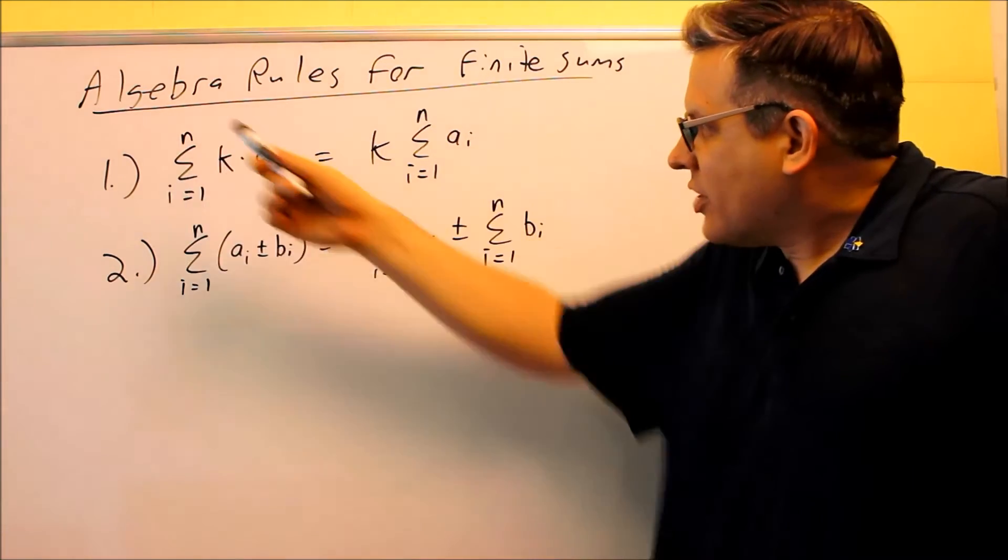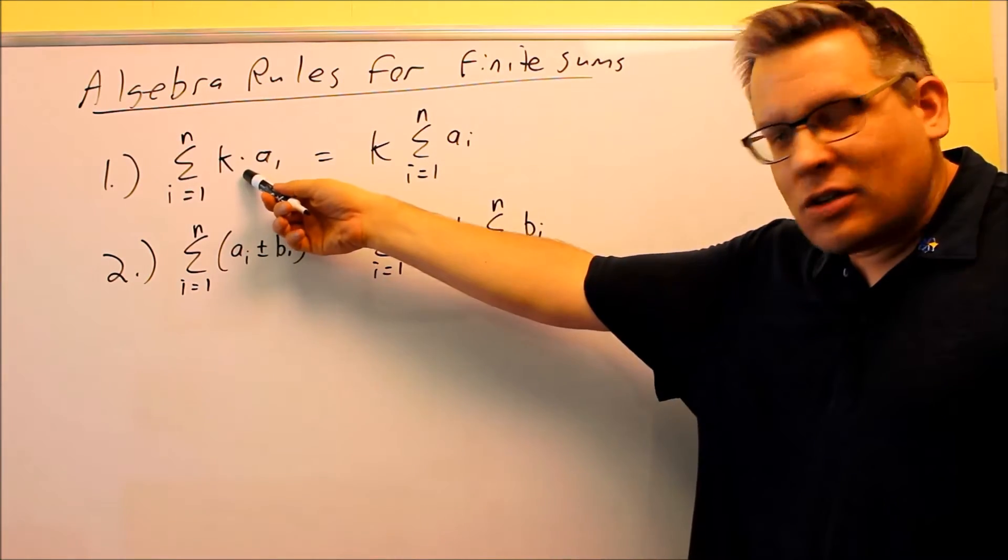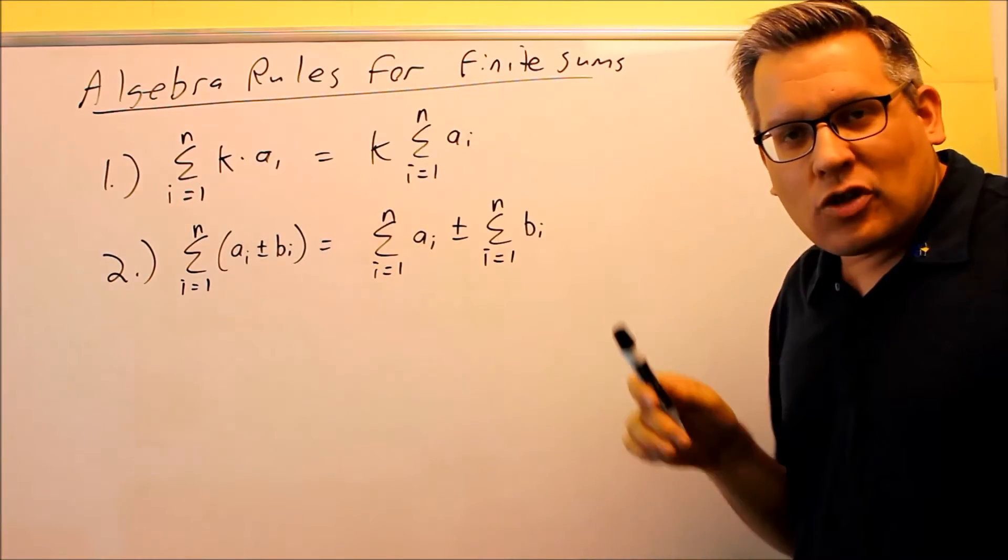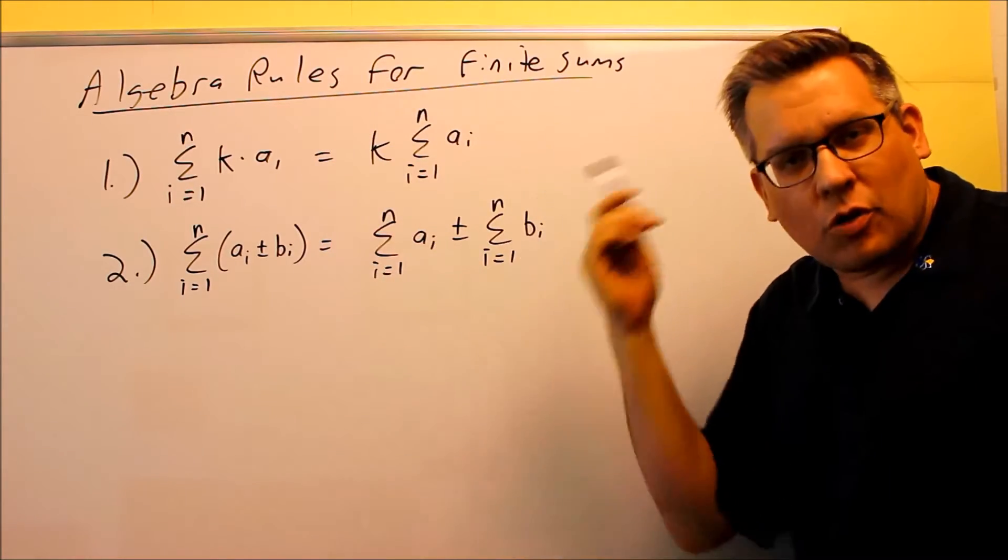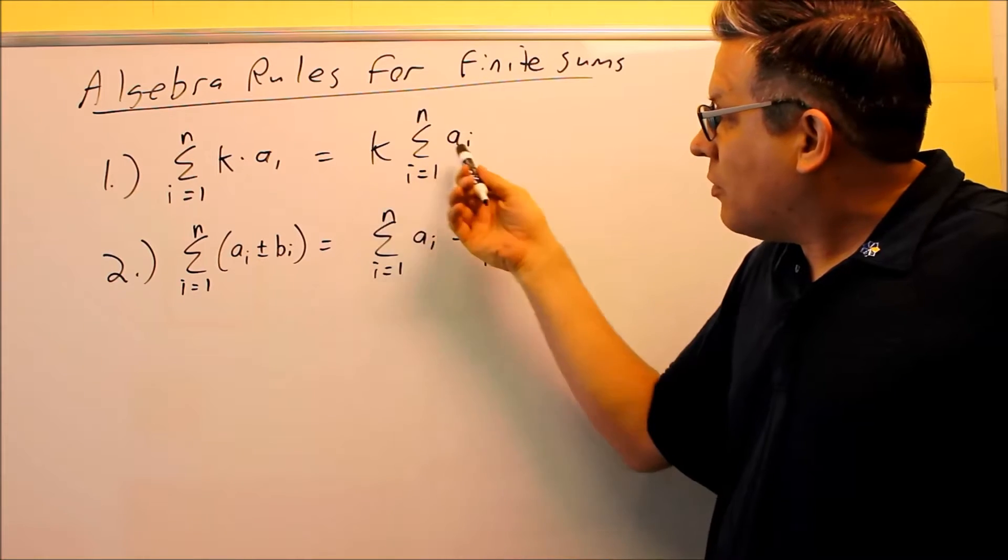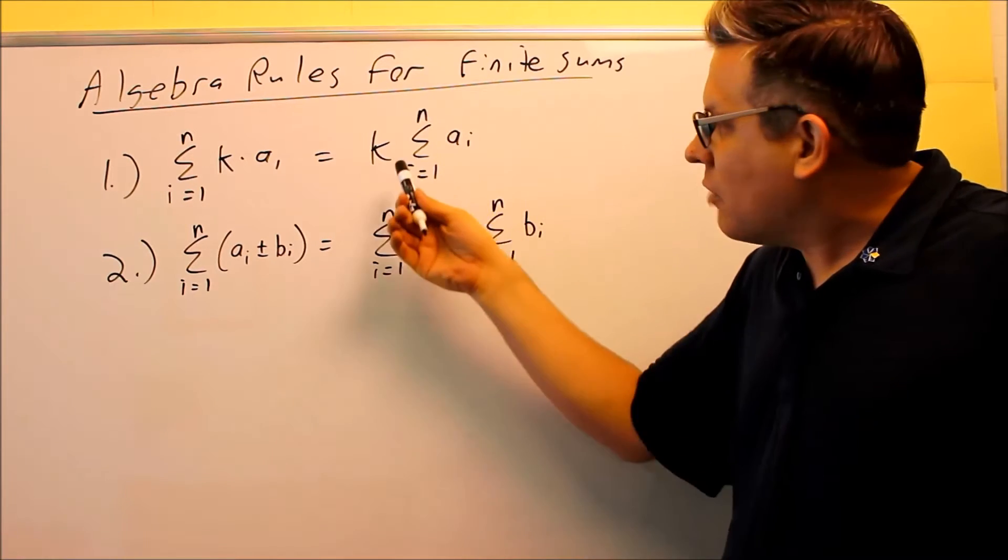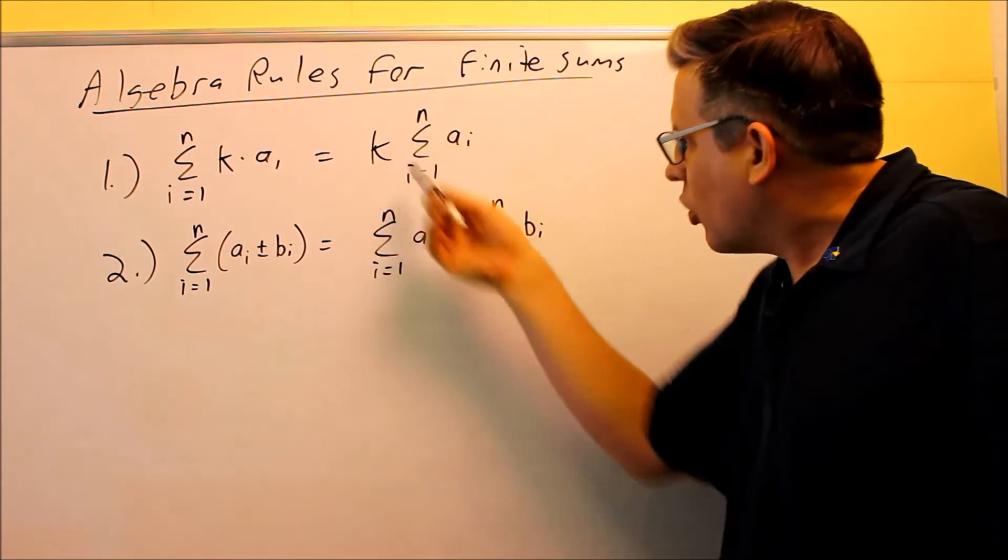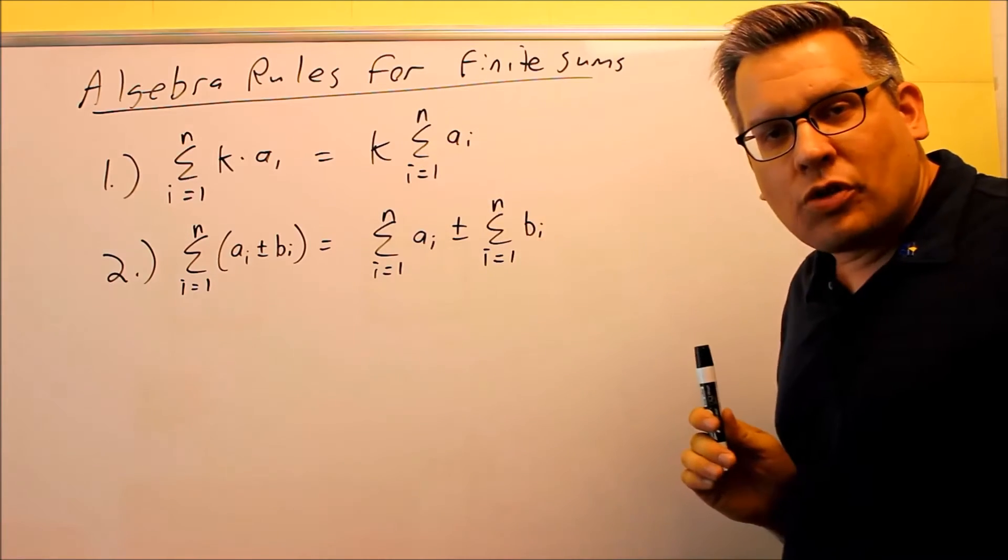We have i equals 1 to n, and if you have some constant that's in front of some kind of expression—this could be x squared or cosine, it could be anything—that k value can be brought on the outside of the summation. So we can move that on the outside and then we can just work with the sum with that formula.